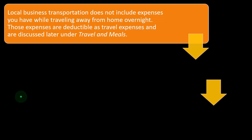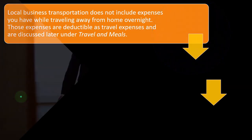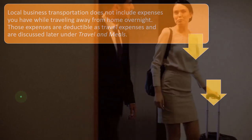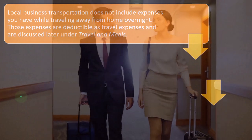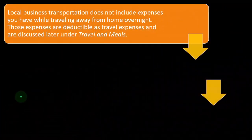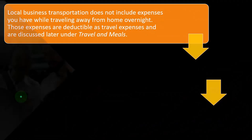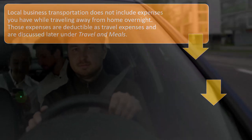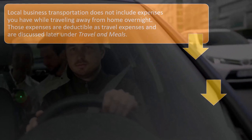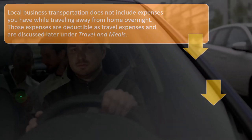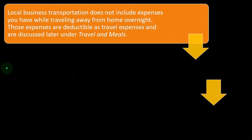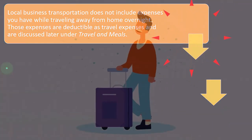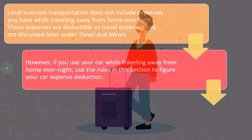Local business transportation does not include expenses you have while traveling away from home overnight. The tax code breaks up the type of expenses for travel, such as driving your car for local travel around your tax home, and longer distance travel that would usually mean spending the night outside of your local area. Those expenses are deductible as travel expenses and are discussed later under travel and meals.